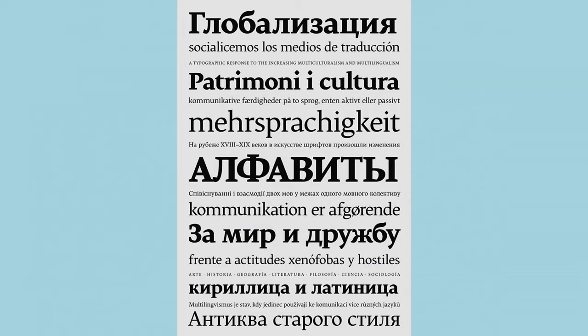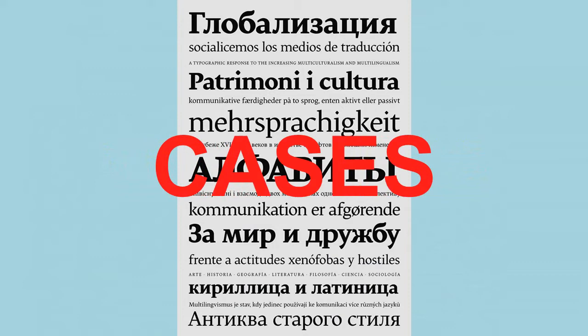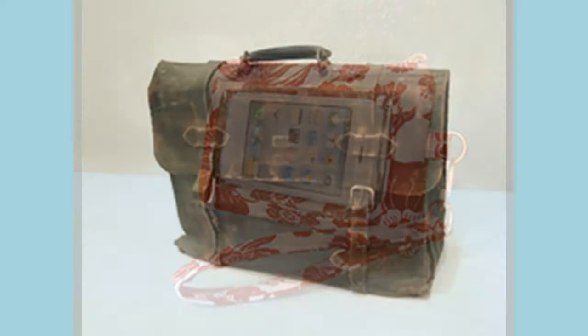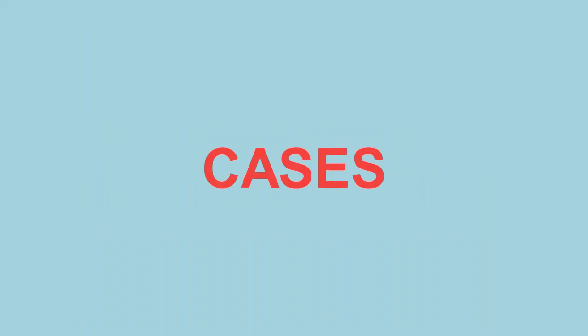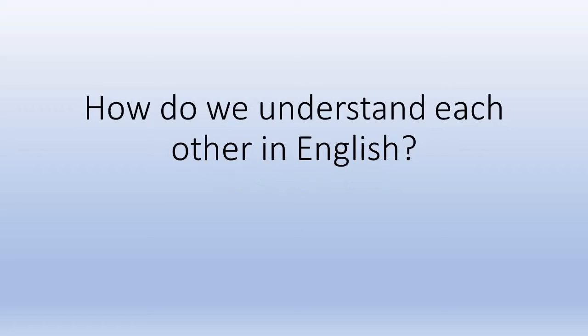Latin uses a very different grammatical system than English, which means you really have to change the way you think about forming sentences. Latin uses a system made up of what we call cases. That word might seem out of place to you when talking about grammar — you might be picturing a phone case, or maybe a briefcase. Most native English speakers haven't heard about cases in a language, even though a lot of languages use them. In order for you to understand the case system in Latin, first we need to talk about how sentence structure works in English, so you can understand the differences and purpose of the Latin cases.